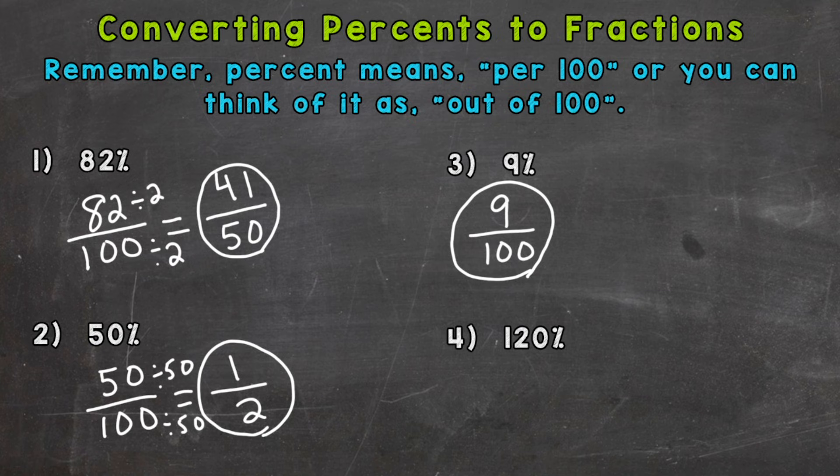And number 4, 120 percent. So that means 120 out of 100. And that's an improper fraction, so it's going to be greater than one whole. We can pull one whole 100 out of 120 with 20 left over. Keep our denominator of 100 the same.